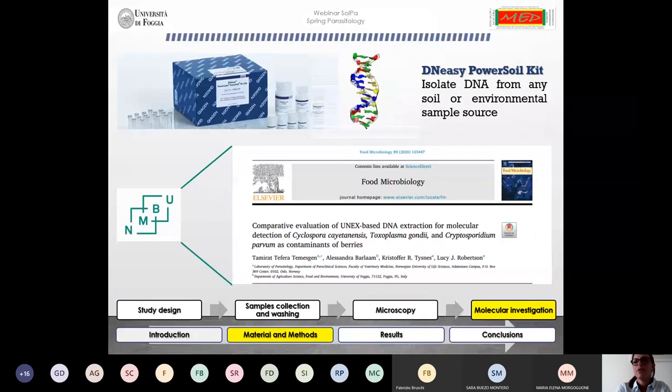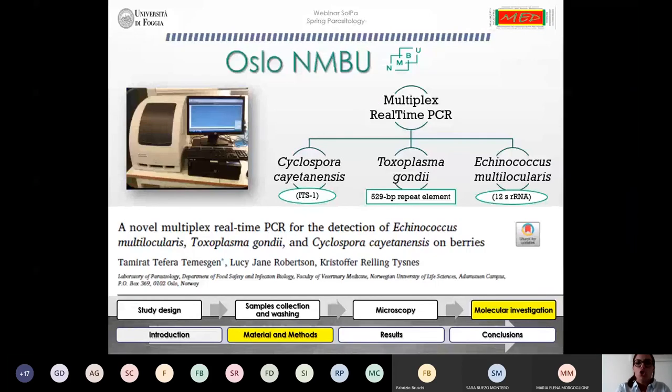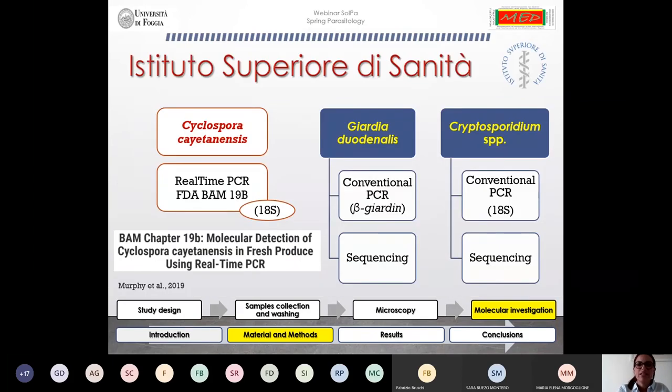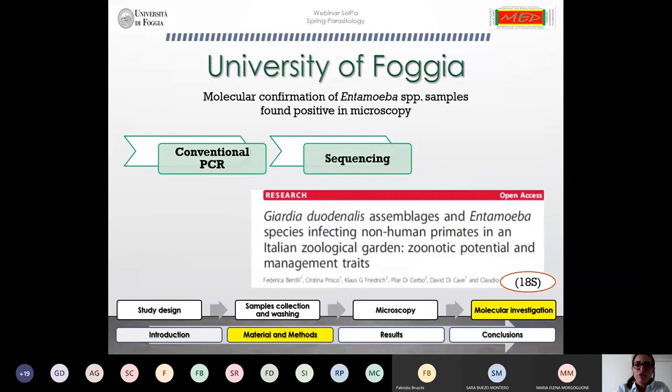Our molecular investigation continued at Oslo NMBU where we screened our samples using a multiplex real-time PCR for the detection of Cyclospora cayetanensis, Toxoplasma gondii, and Echinococcus multilocularis. In addition, at Istituto Superiore di Sanità, we screened our samples for the detection of Cyclospora cayetanensis using a real-time PCR protocol by the FDA, the protocol FDA BAM 19B. We also looked for Giardia duodenalis and Cryptosporidium using two conventional PCR methods and sequencing.